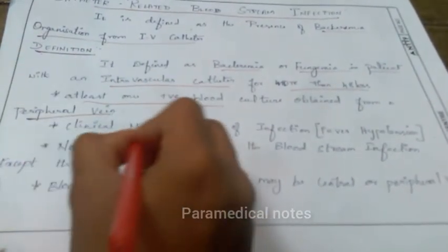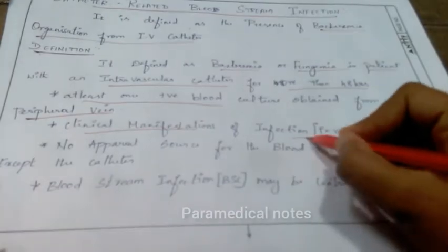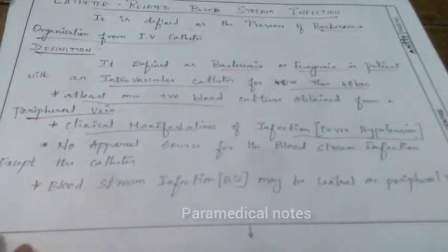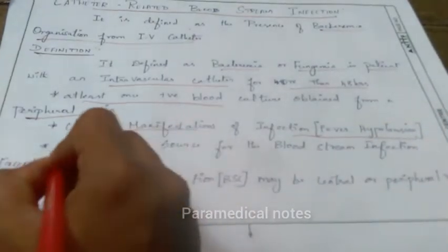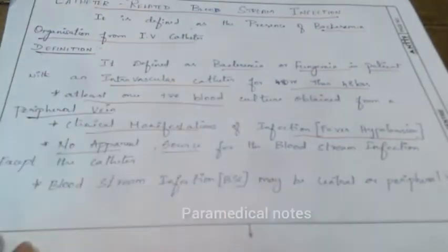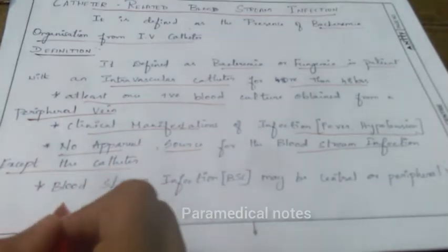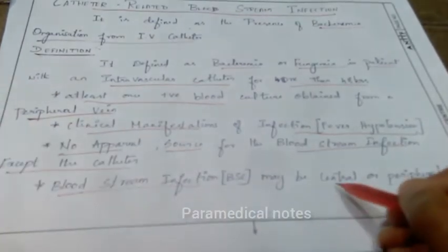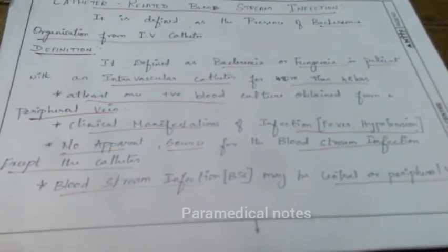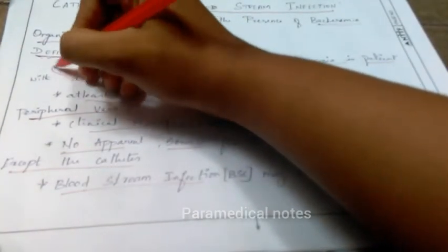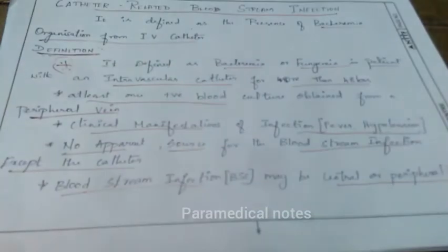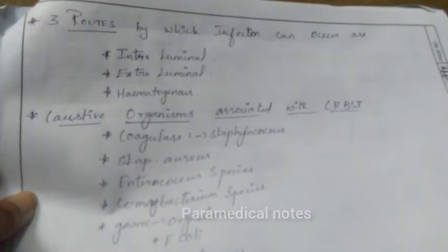For example, if blood culture is positive, we have to check whether it was obtained from a peripheral vein. Clinical manifestations of infection include fever or hypotension. Bloodstream infection may be from a central or peripheral vein source.